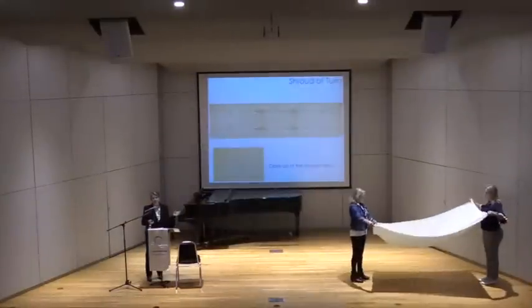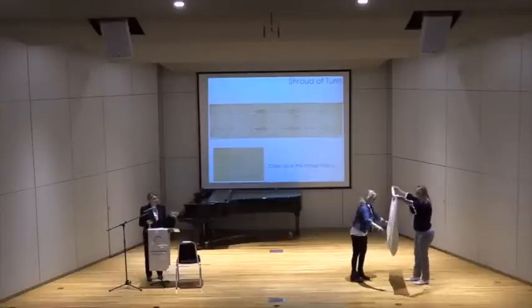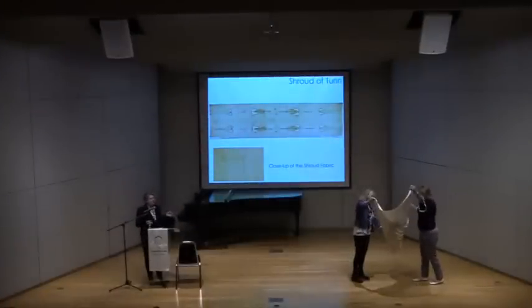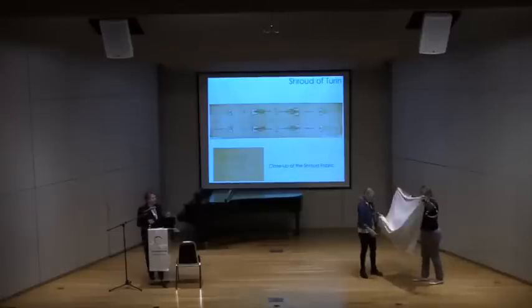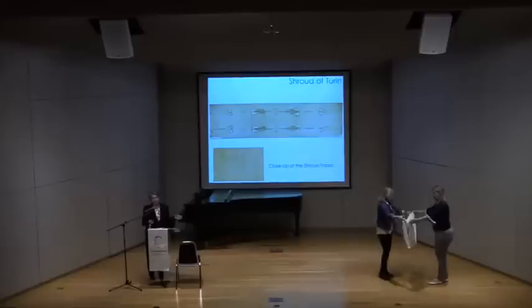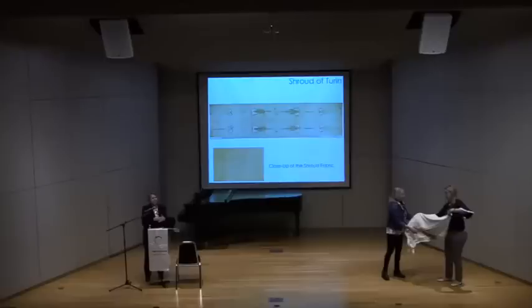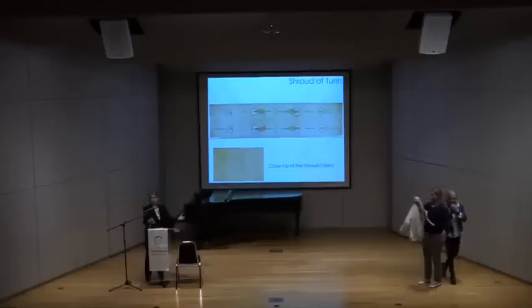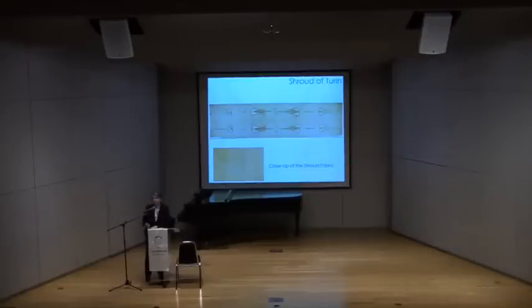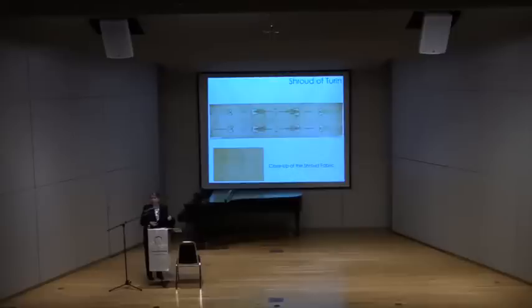An important piece of information is that the Shroud was folded and stored in various ways during its history, and that folding included information about where the Shroud was. When they fold the Shroud, it's like taking paper and folding it to cut out a snowflake — when you open it, the hole goes all the way through. That's what happened at one point in the Shroud's history: it had a burn. A burn could penetrate through the folded fabric and be reflected throughout the entire cloth.